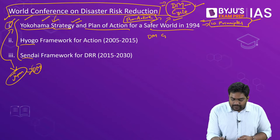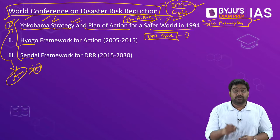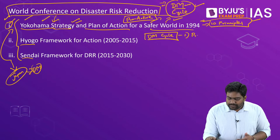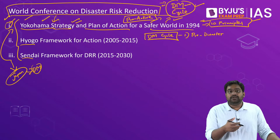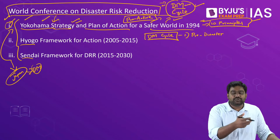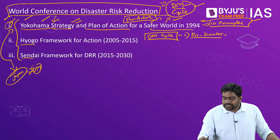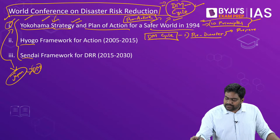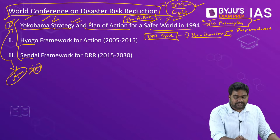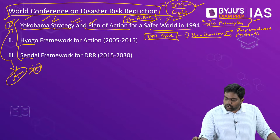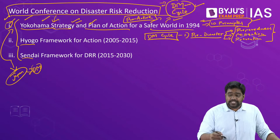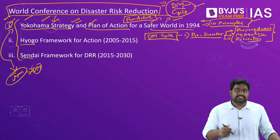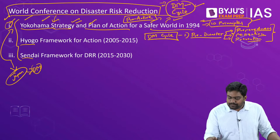Under the DM cycle, three phases in disaster management were emphasized. The first is the pre-disaster phase — before a disaster could actually happen. Under this phase there was focus on preparedness, mitigation, and prevention because certain disasters can be prevented and certain disasters can be mitigated. You can prepare for the impact of a disaster to bring down its overall impact, but this preparation has to happen in the pre-disaster phase.